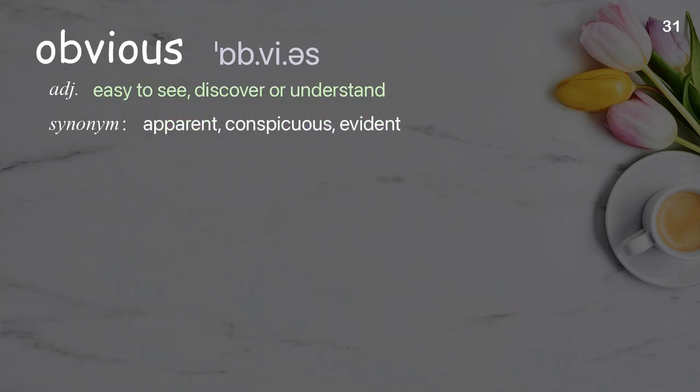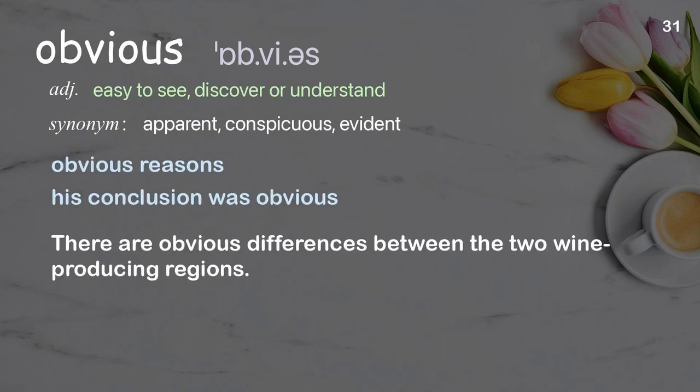Obvious: easy to see, discover, or understand. Examples: obvious reasons, his conclusion was obvious. There are obvious differences between the two wine producing regions.